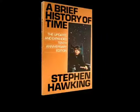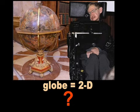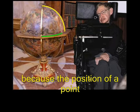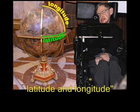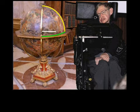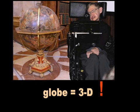So is there a problem with these conventions? In his book A Brief History of Time, Stephen Hawking claims that the globe he has in his living room is two-dimensional. The surface of the Earth is two-dimensional because the position of a coin can be specified by two coordinates, latitude and longitude. For unknown reasons, Hawking omits the number line known as radius, which would make his globe 3D.